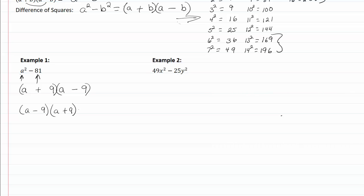Let's take a look at example two. I have a perfect square for the first term, a perfect square for the second term. So I'm going to put in my two sets of parentheses.